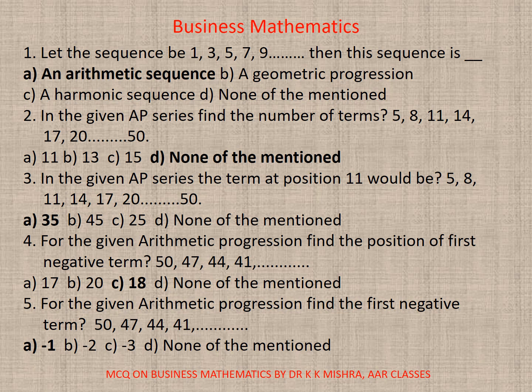Question 3. In the given AP series, the term at position 11 would be 5, 8, 11, etc. If you calculate, you will find it to be 35. So correct option is A.